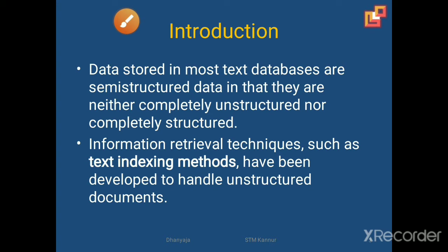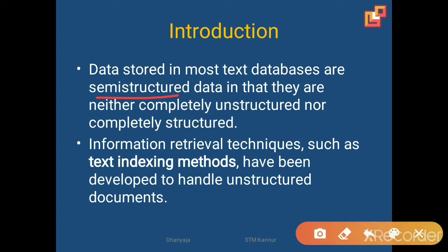Normally, text databases are semi-structured because they are not completely structured or completely unstructured. For example, if we are storing title, author name and all, it will be in a structured format. Other contents like abstract or contents of a book will be in an unstructured format. So text databases will be semi-structured. From the semi-structured database, we will retrieve information using indexing methods.